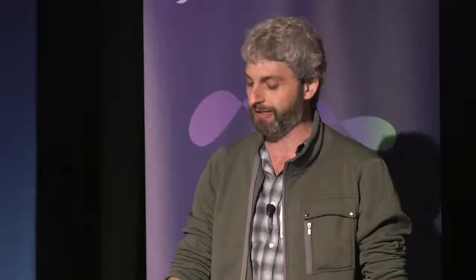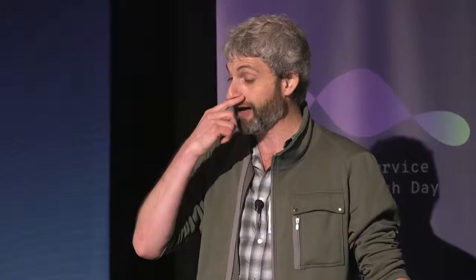I greatly underestimated the demand in the market for a proxy that could be used in this generic way, and people have built really incredible things on top of it. Looking at adoption, it ranges from all of the major cloud providers to probably tens of startups building their businesses on top of Envoy, to companies like Lyft who are large internet providers using Envoy. The use cases are also very wide — they range from API gateway, edge proxy, to service-to-service proxying and middle proxying. I'm continuously blown away by the different use cases that pop up.